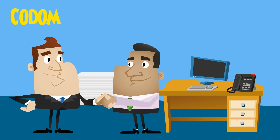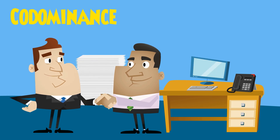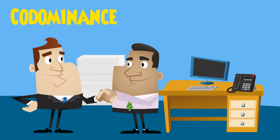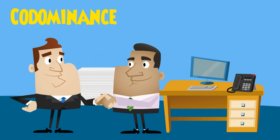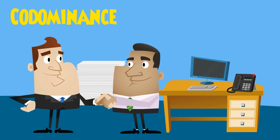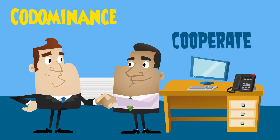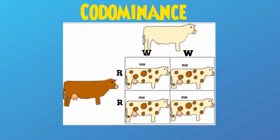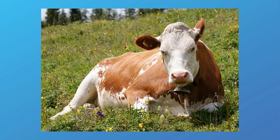With co-dominance, both traits appear. Remember, 'co' means together — like 'cooperate,' which means working together. One common example involves a white and brown cow, and you get a spotted cow which is both white and brown.